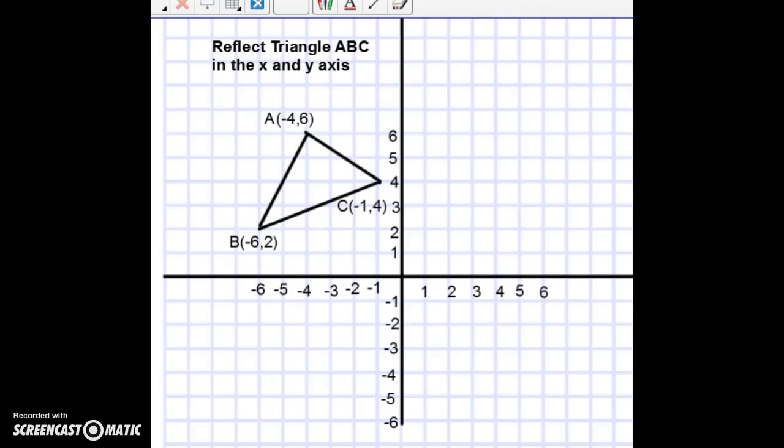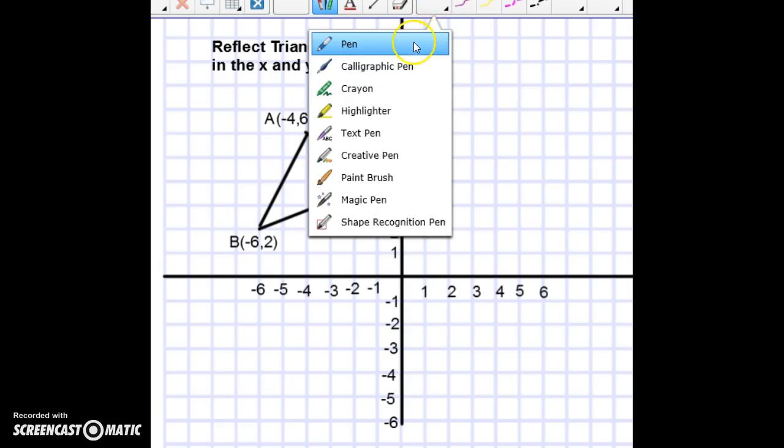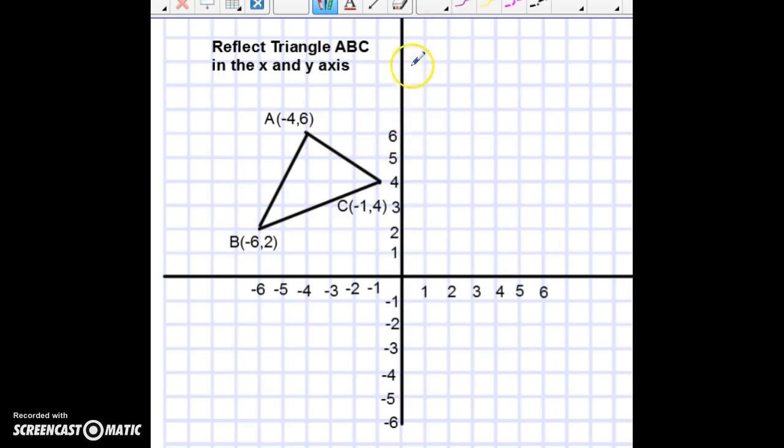In our next screencast, we're going to have a look at how you reflect triangle A, B, and C in both the x and the y axis. So what if we wanted to take the triangle and reflect it about the axis so that it's almost like a mirror? If you consider a mirror and you were to look at your face in the mirror, the closest part to the mirror would be your nose, and the closest part in the image you see in the mirror would be your nose as well.